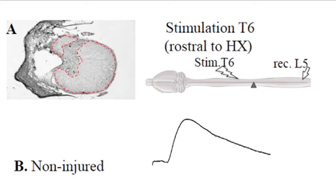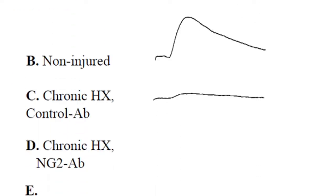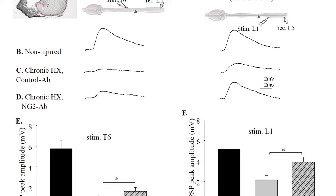After hemisection injury, the signal is decreased. However, in the rats that have been treated with NG2 neutralizing antibody, we have partial recovery of this signal. This means that treatment with NG2 antibody improves not only transmission in damaged spinal cord, but it improves anatomical plasticity in damaged spinal cord.